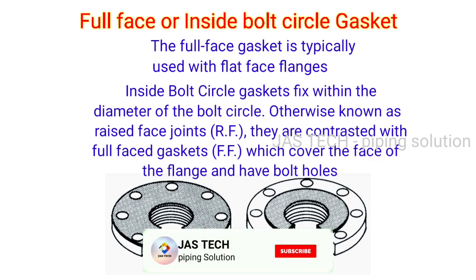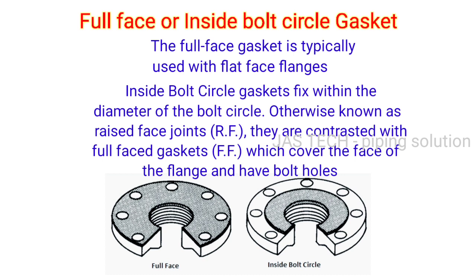Full face or inside bolt circle gasket: The full face gasket is typically used with flat face flanges. The inside bolt circle gasket is fixed within the diameter of the bolt circle, otherwise known as a raised face joint. They are contrasted with full face gaskets, which cover the full face of the flange and have bolt holes.